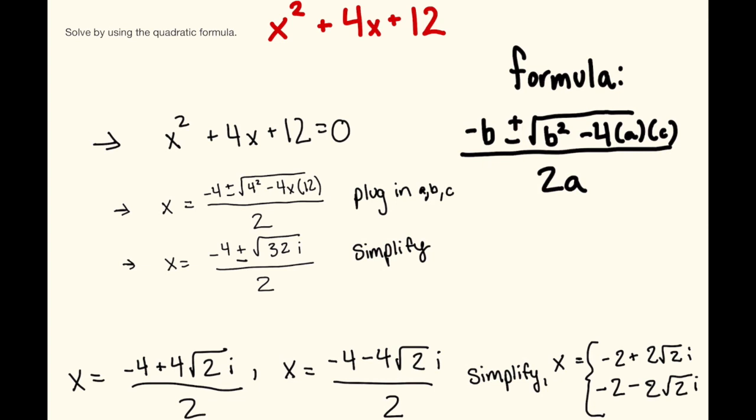The quadratic formula is negative b plus or minus the square root of b squared minus 4 times a times c all over 2a.